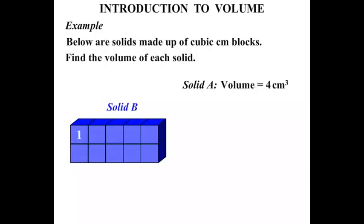Now let's count them. 1, 2, 3, 4, 5, 6, 7, 8, 9, 10. So we would say that Solid B has a volume equal to 10 cm³.